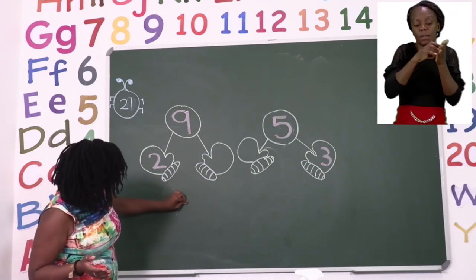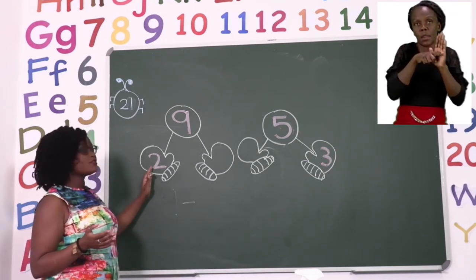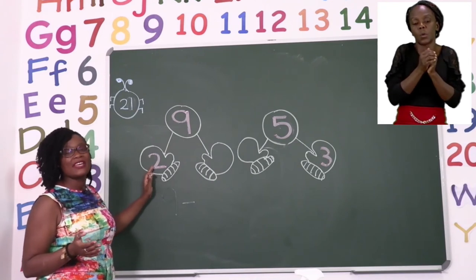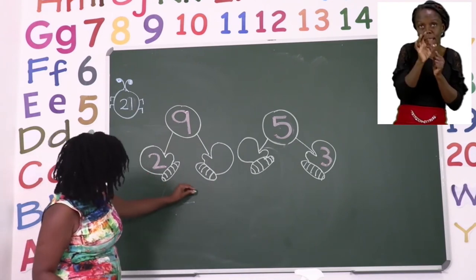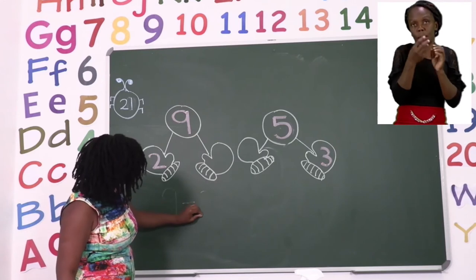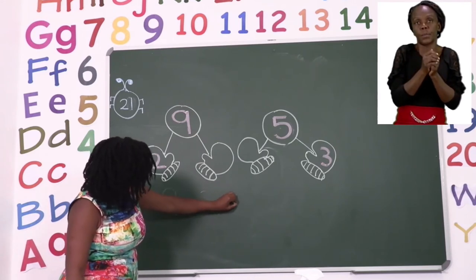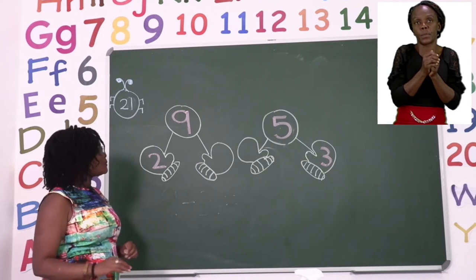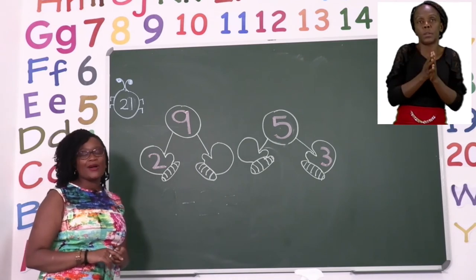So we say nine minus the number on the mitten we have, which is two. So if we say nine take away two, that's when we'll be able to find our answer.